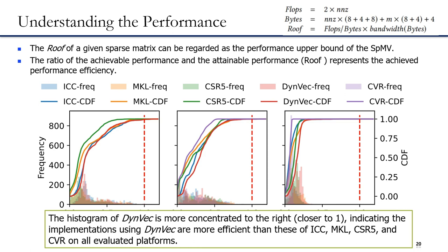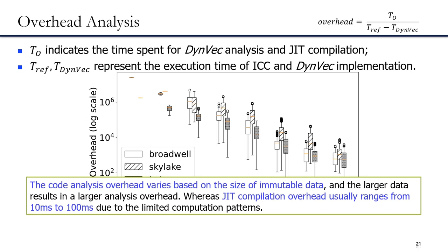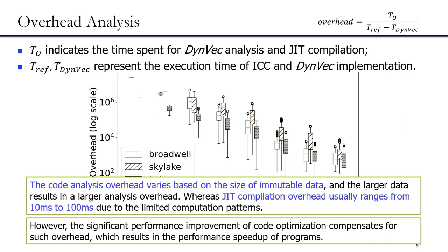The overhead of DEMV consists of two parts including code analysis and JIT compilation. We represent the overhead as the number of iterations needed to compensate for the time of code analysis and JIT compilation, as shown in the equations in the slide. The code analysis overhead varies based on the size of the mutable data, and larger data results in larger overhead. JIT compilation overhead is usually between 10 ms and 100 ms due to the limited computation patterns. However, the significant performance improvement from code optimization compensates for such overhead, resulting in overall performance speedup.